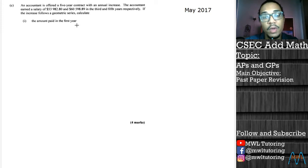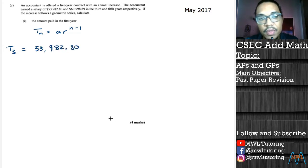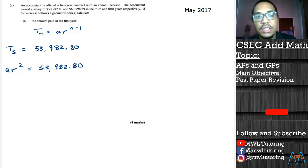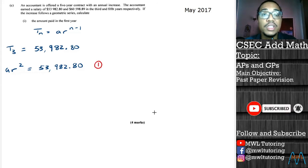When we're dealing with GPs, the formula that we use for the nth term is T_n equals a r to the n minus 1. We have two sets of information. We have T_3 which they told us is $53,982.80, and T_3 could be represented with a and r where the formula would be a r^(n-1), well 3 minus 1 is 2, and this here is our first equation.